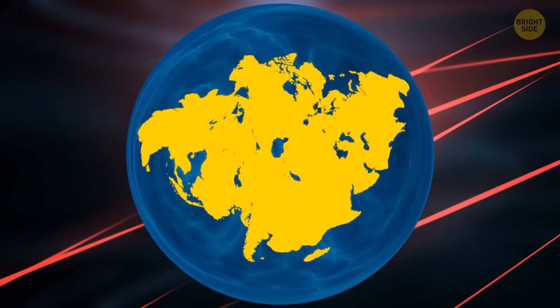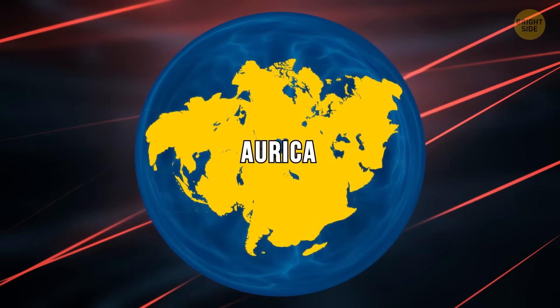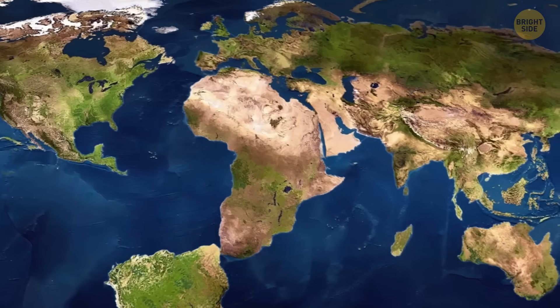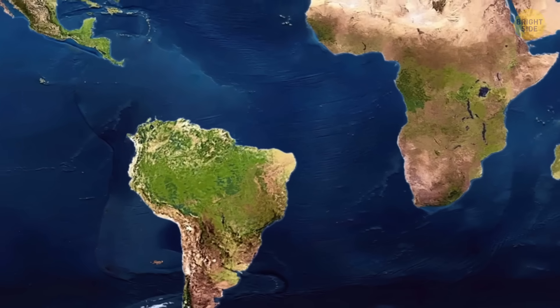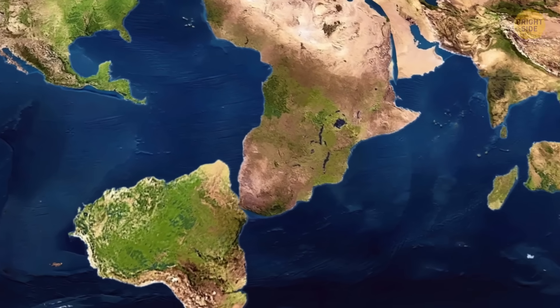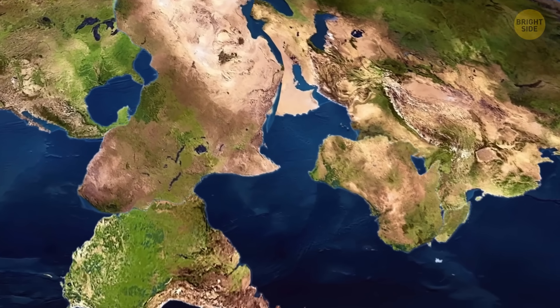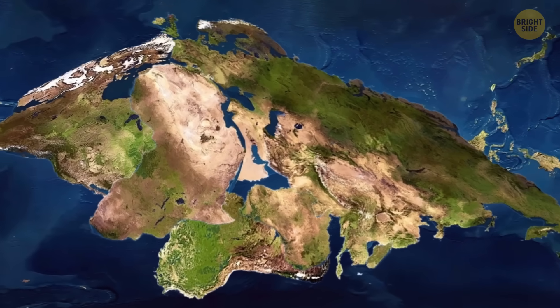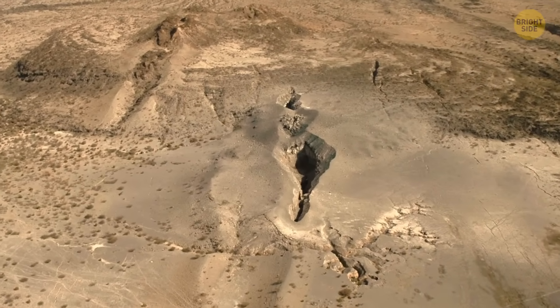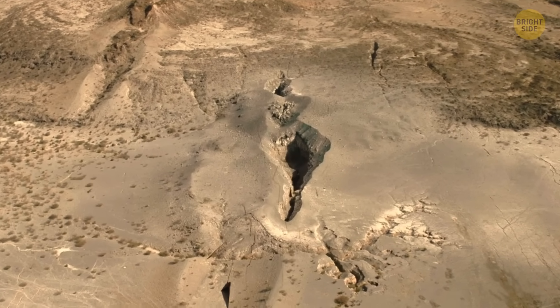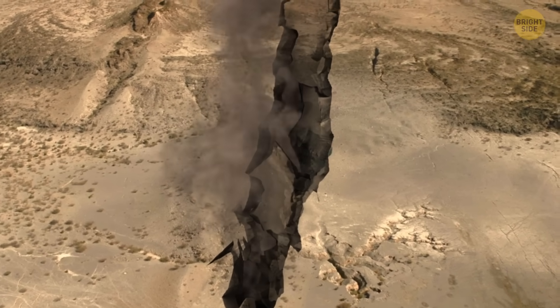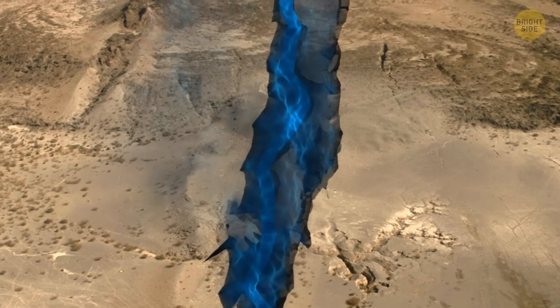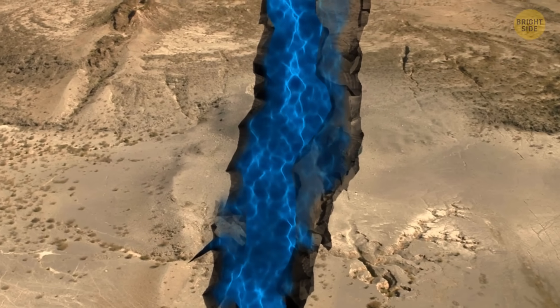The next possible supercontinent is Orica. In this scenario, the Pacific and Atlantic Oceans might decide to take a nap and close up. But don't worry, because when one door closes, another opens. In this case, a whole new ocean would pop up to replace them. Imagine a big crack in the ground cutting through Asia, like a zipper opening up. This crack is called the Pan-Asian Rift, and it would become a brand-new ocean.